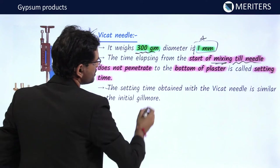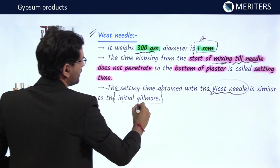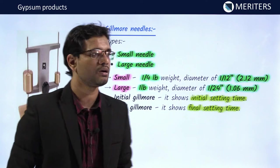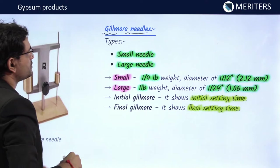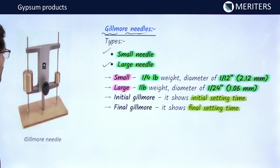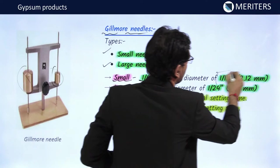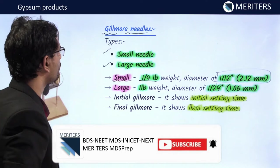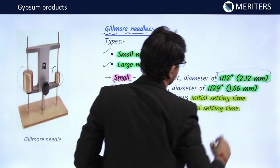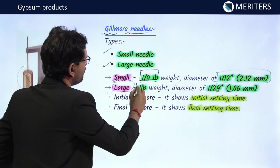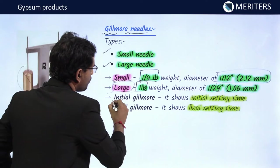The Gilmore method uses two needles: a small needle with a diameter of 1/12 inches (2.12 mm) and a quarter-pound weight, and a large needle with a diameter of 1/24 inches (1.06 mm) and a one-pound weight. The initial Gilmore method gives initial setting time and the final Gilmore method gives final setting time.